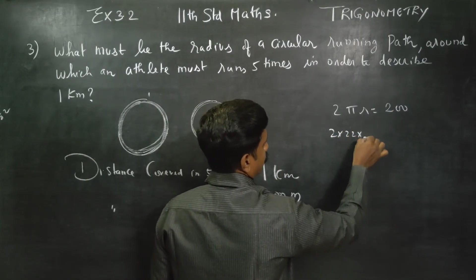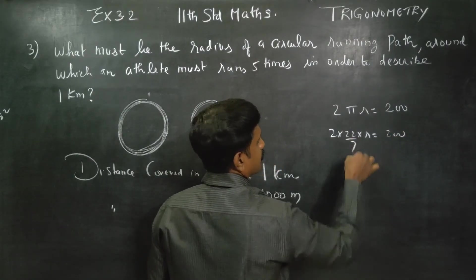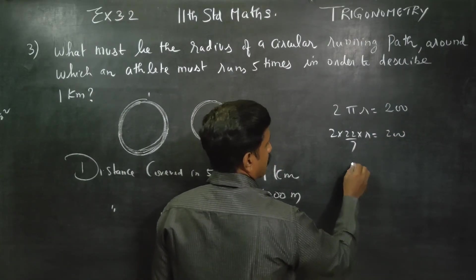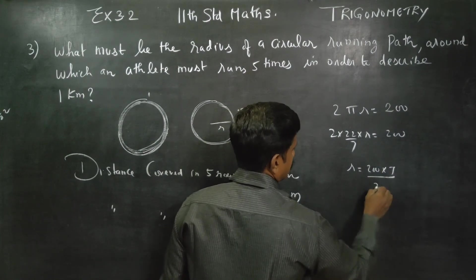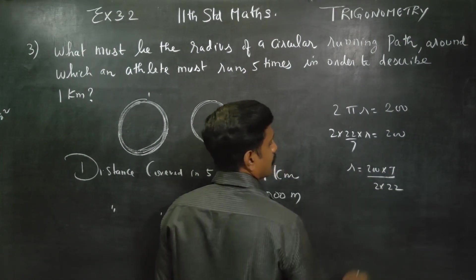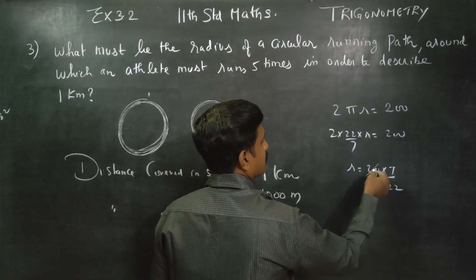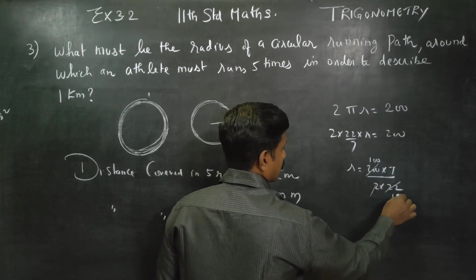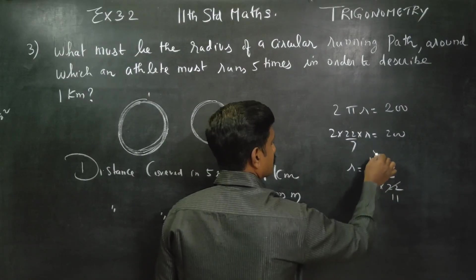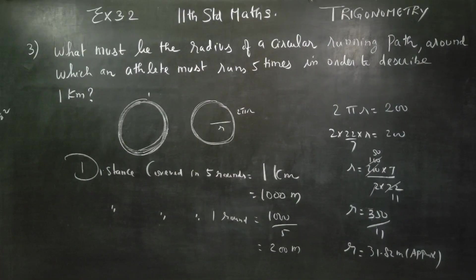Substituting π as 22/7: 2 × (22/7) × R = 200. Solving for R: R = 200 × 7 divided by 2 × 22. The 2s cancel, giving 100 × 7 divided by 22, which simplifies to 350 divided by 11. You will be getting 31.82 as the answer.